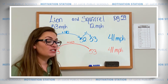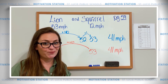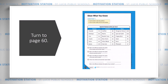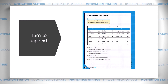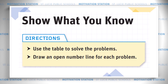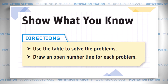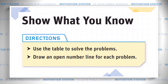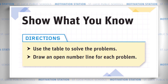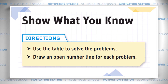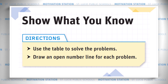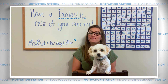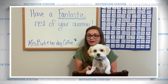Remember, you can do these two animals or you can choose your own animals to show — it's up to you. Page 60: your last show what you know is on page 60. The directions say use the table to solve the problems and draw an open number line for each problem. The table has the speeds of different animals and you will be asked to find the difference in speeds. We've had a great four weeks with you guys — we hope you have a fantastic rest of your summer. Bye now!